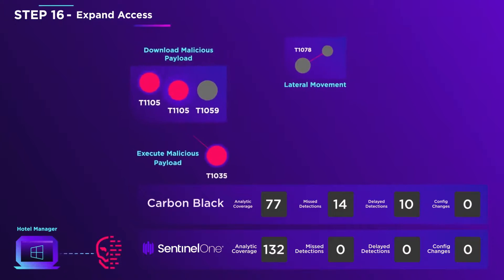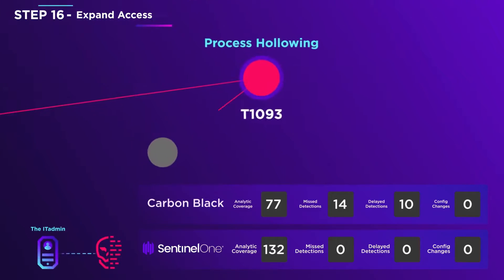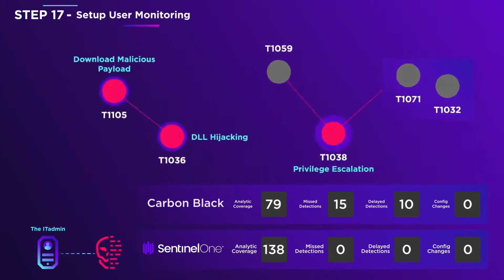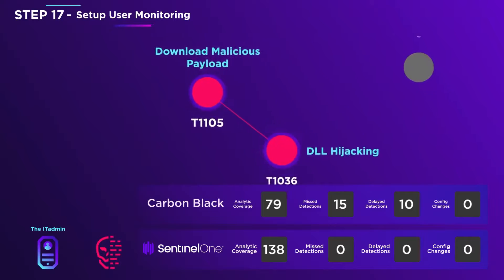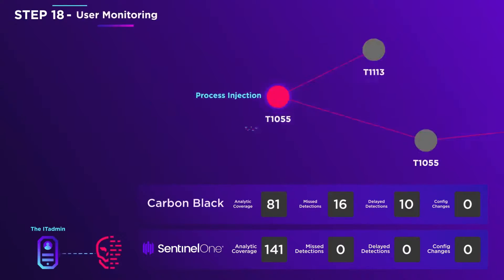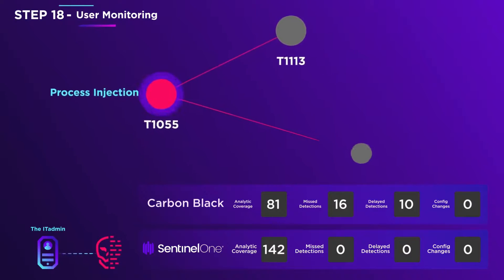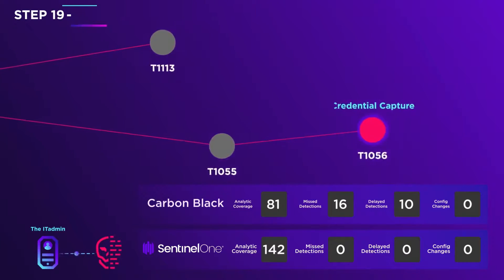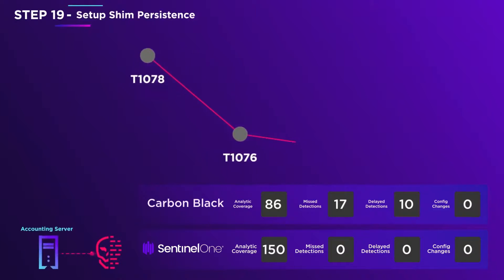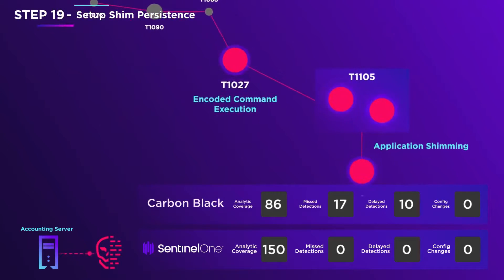He then pivots attention to the IT admin computer, makes an SMB connection to it, and executes a technique called process hollowing in order to harness portions of the remote host memory for his purposes. The adversary is now operating from the IT admin computer. He downloads a fake copy of a Windows DLL from the C2 for privilege escalation. The attacker continues to misuse legitimate OS components with fake ones and exfiltrates keyboard inputs and screenshots from the IT admin computer. Using stolen credentials, the adversary moves from IT admin to the accounting server, misusing Windows Remote Desktop in an unusual way to proxy communication from his C2 to accounting via his IT admin session.